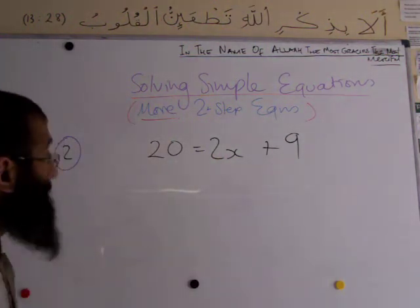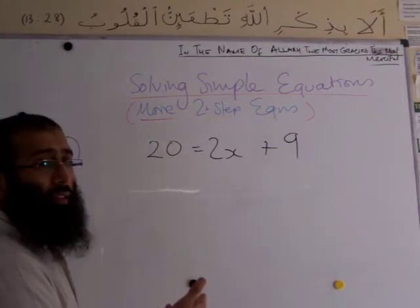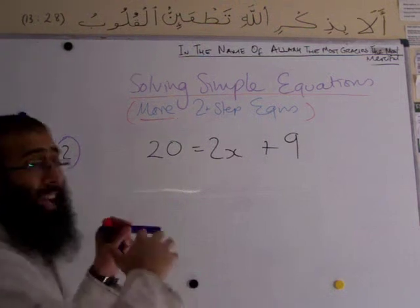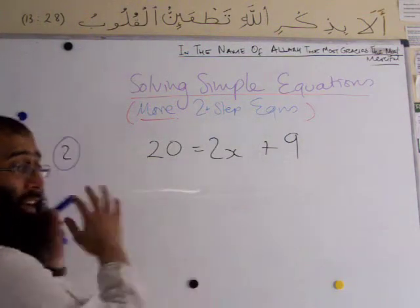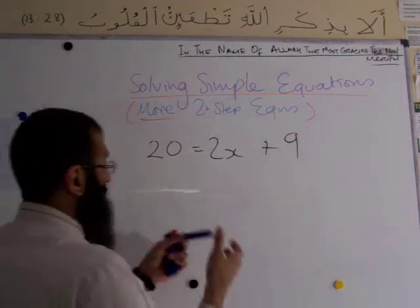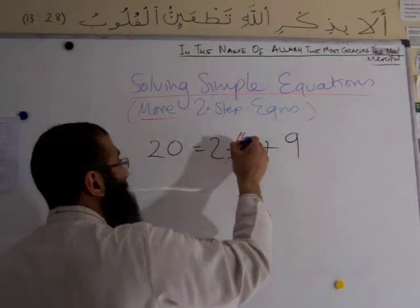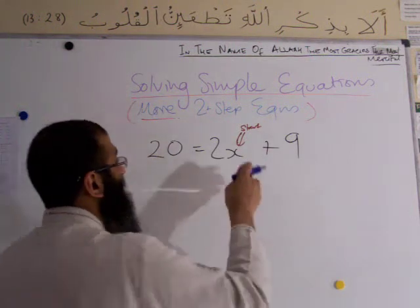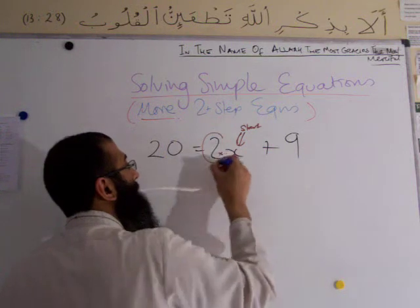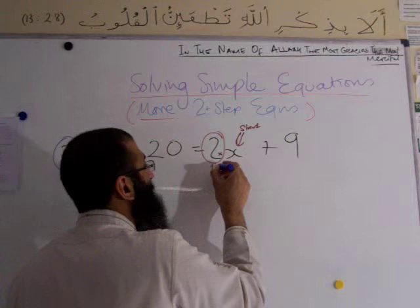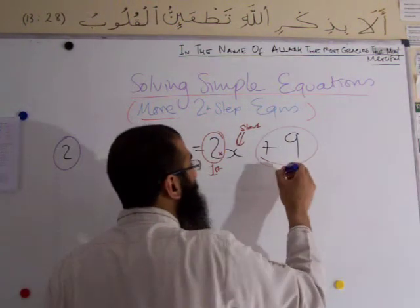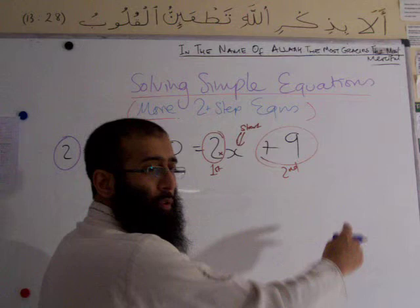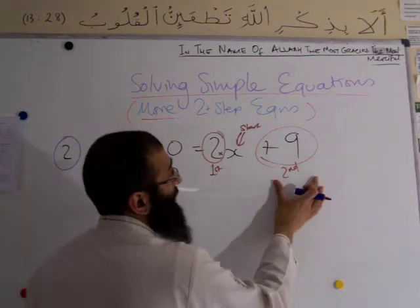Question two: 20 equals 2x plus 9. You might be thinking — why is the x now on the right-hand side? That shouldn't cause a problem. If the x is on the right, we move everything to the left. Start again at the x, read the equation: x is first being multiplied by 2 — that's the first action. Then it's being added by 9 — that's the second action. It's important to know which is first and which is second.